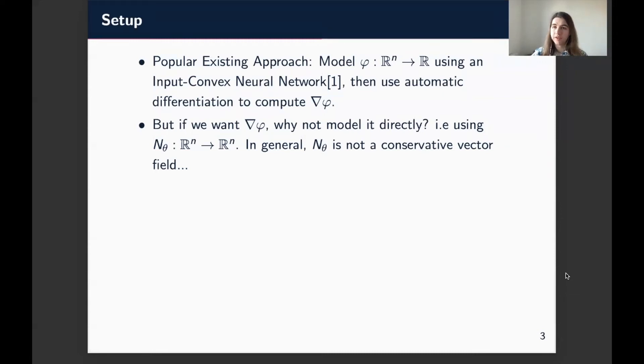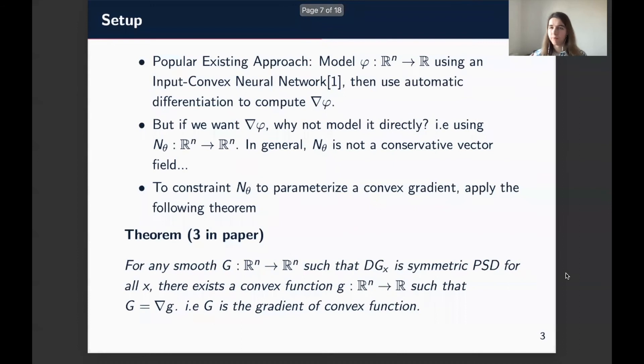But we wanted some way of doing this on the level of gradient. So what we came up with is a theorem which basically characterizes when a vector field is actually the gradient of a convex potential. So we call it a theorem, but really it's just a simple consequence of combining two results.